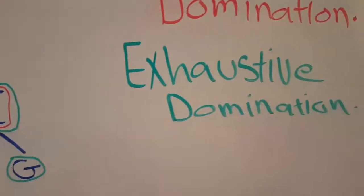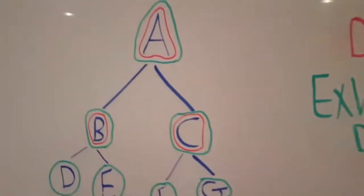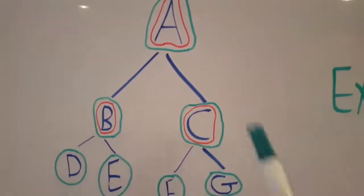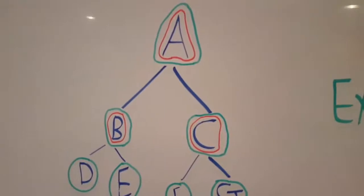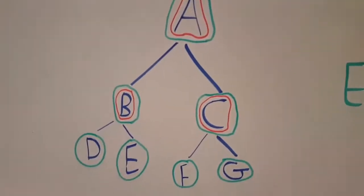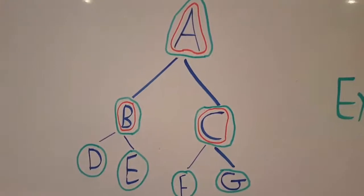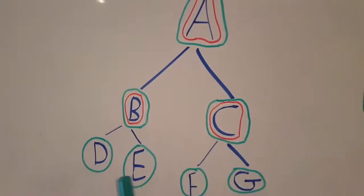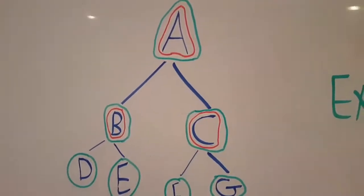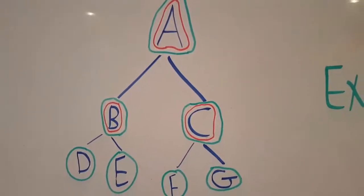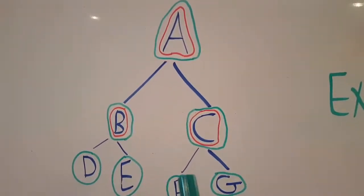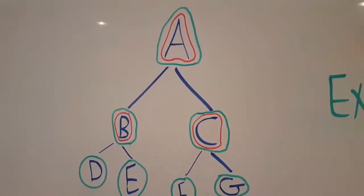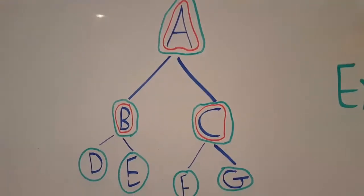Now let me discuss exhaustive domination. By exhaustive domination I mean that the letter at the top dominates all letters in the tree. A dominates C, B, D, E, F, G — A dominates all the letters in the tree. That is what exhaustive domination means: it exhaustively dominates everything in the tree.